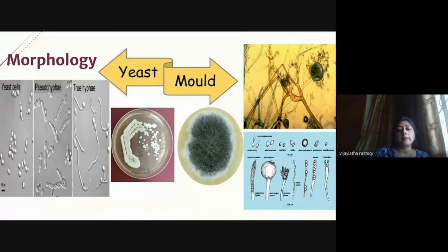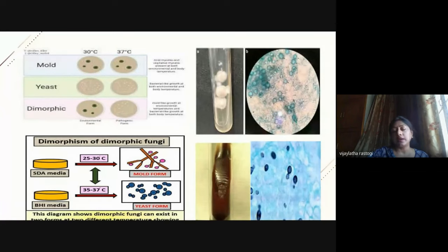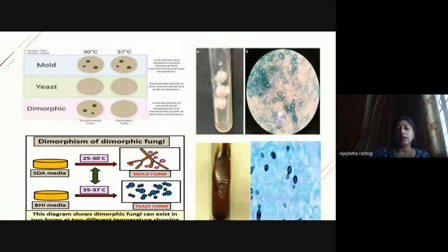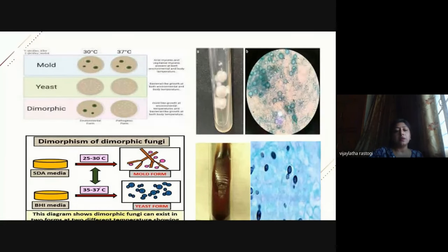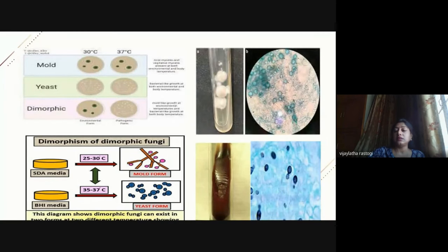Beyond yeasts and molds, there are dimorphic fungi. A fungus growing as a filamentous mold at both 30°C and 37°C is a mold; one growing as pasty creamy yeast colonies at both temperatures is a yeast. A dimorphic fungus grows as a mold at 30°C but converts to yeast form at 37°C—this is called thermal dimorphism. Examples include Histoplasma capsulatum, Blastomyces dermatitidis, Paracoccidioides brasiliensis, and Coccidioides immitis.